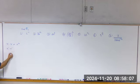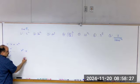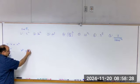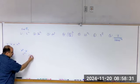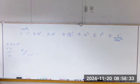So x to the second times x — there's a one there — is x to the second plus one, which is x to the third. We just don't write the one. X to the first is just x.